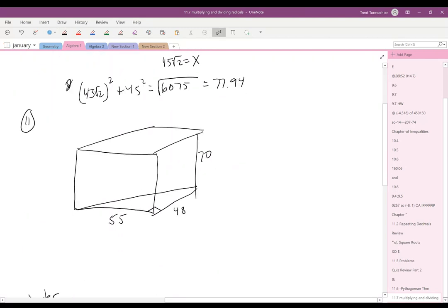to find what we call the diagonal of the base. And if you're having trouble picturing this, grab a box in your house and kind of move it around and touch it and feel it and look at it to see what I'm talking about. But the diagonal of the base is just going to be, we call it x, it's going to be 48 squared plus 55 squared equals x squared.